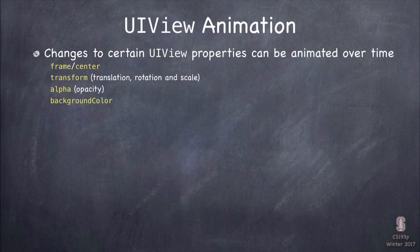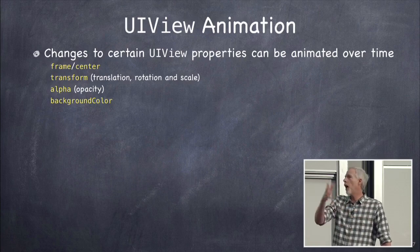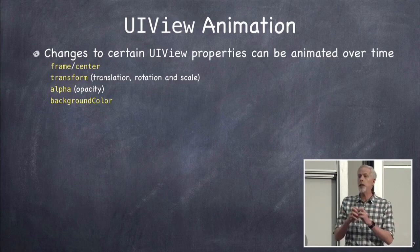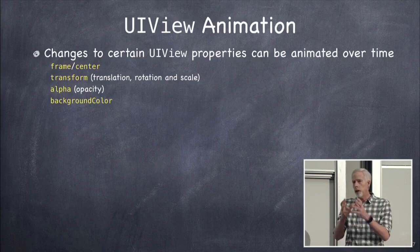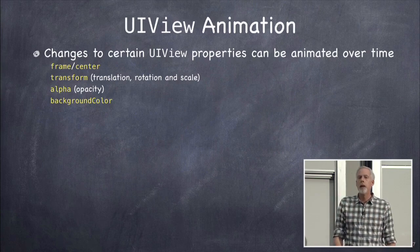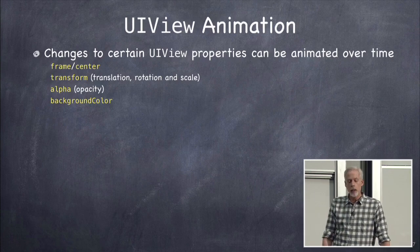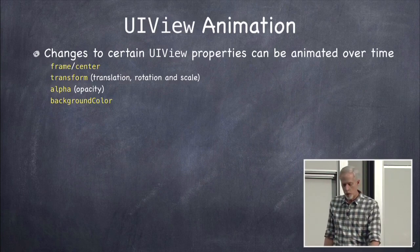Let's talk about UIView animation. What can you animate? You can animate the position of your view — making it slide around on screen. You can animate its transform, which primarily means its size or its rotation, because the translation part of the affine transform you'd do with frame or center. So you can rotate your view or scale it up and down. There's also alpha — opacity — so you can have things fade out or fade in. And background color — you can animate the changing of your background color from one color to another.